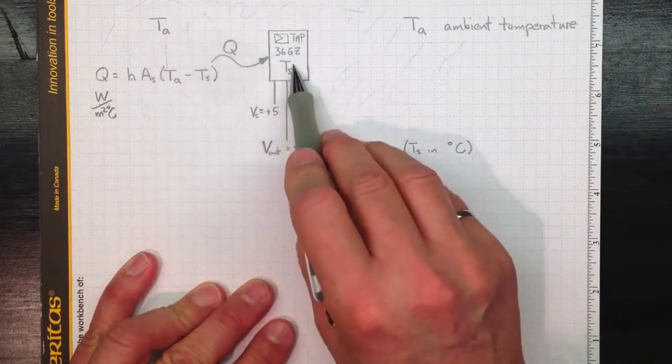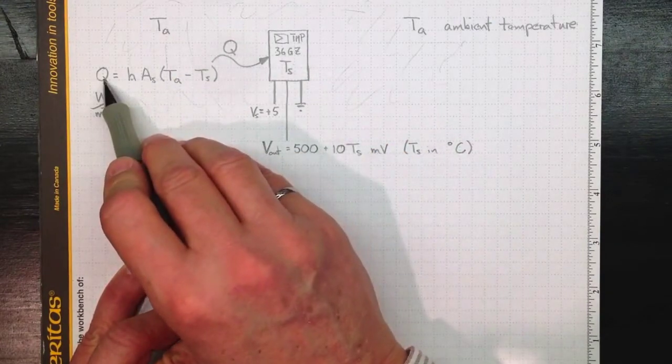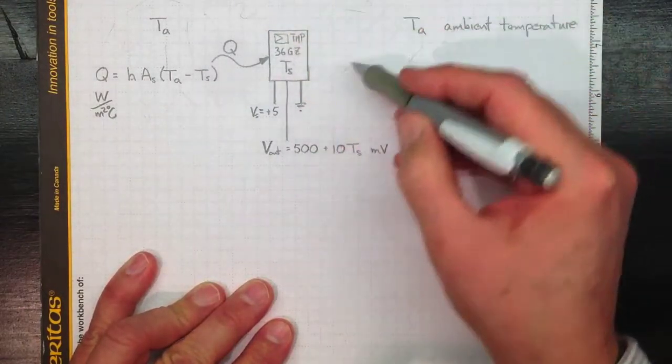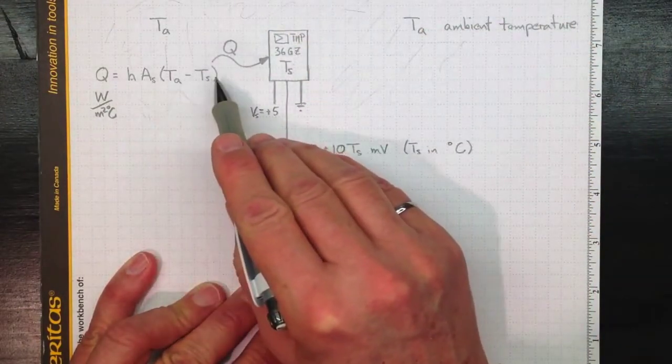So the bigger the difference in temperature, the more heat is going to be transferred. The bigger the area through which that heat is being transferred, the more heat is going to be transferred.